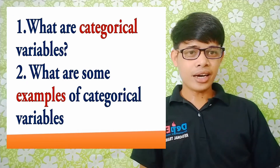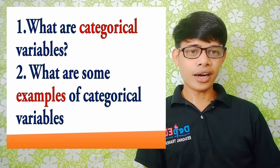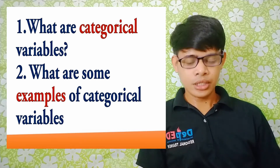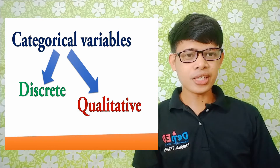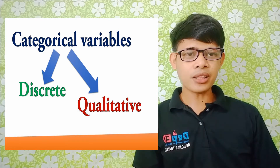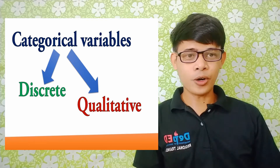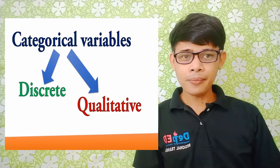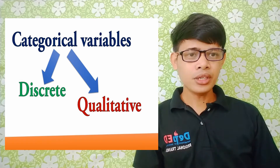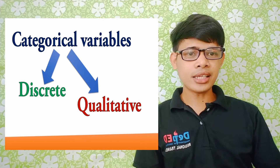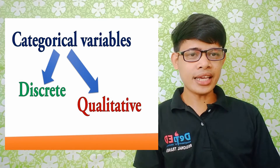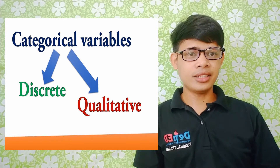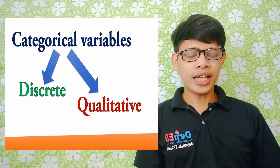We will start with the first and second question: what are categorical variables, and what are some examples of categorical variables? Categorical variables are termed as such because they have categories. Sometimes categorical variables are called discrete variables because they have no specific numerical value. They are also called qualitative variables because they are expressed in words and have no numerical value.